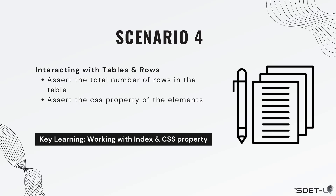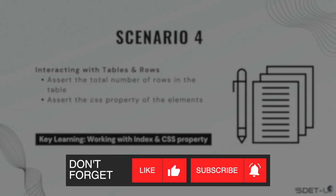Hello, welcome back. It's time for our next scenario. As part of this scenario we will learn how to interact with tables and rows, and we're going to be doing two assertions. The first one is to assert the total number of rows in the table, and the second one is asserting the CSS property of the elements. The key learning here is how to work with index when working with multiple rows, as well as how to verify CSS properties for any element.